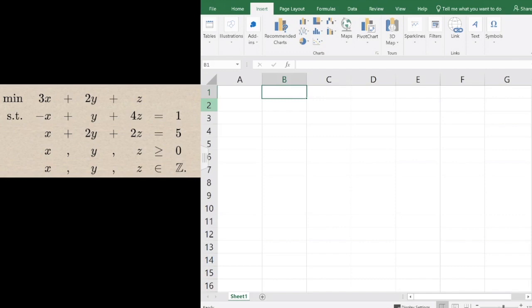We're going to use Excel to solve the integer linear programming problem shown here. Minimize 3x plus 2y plus z, subject to negative x plus y plus 4z equal to 1, x plus 2y plus 2z equal to 5. x, y, z are required to be non-negative integers.